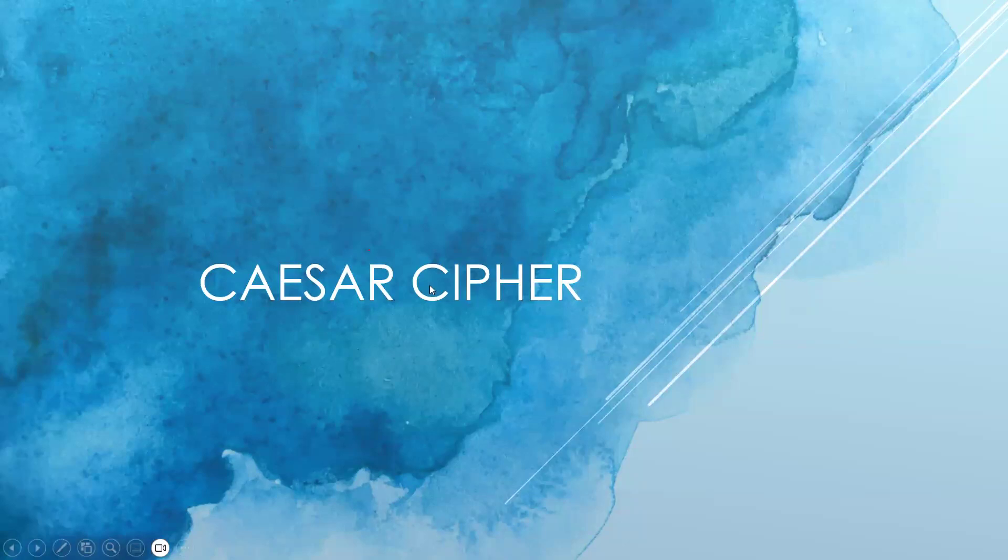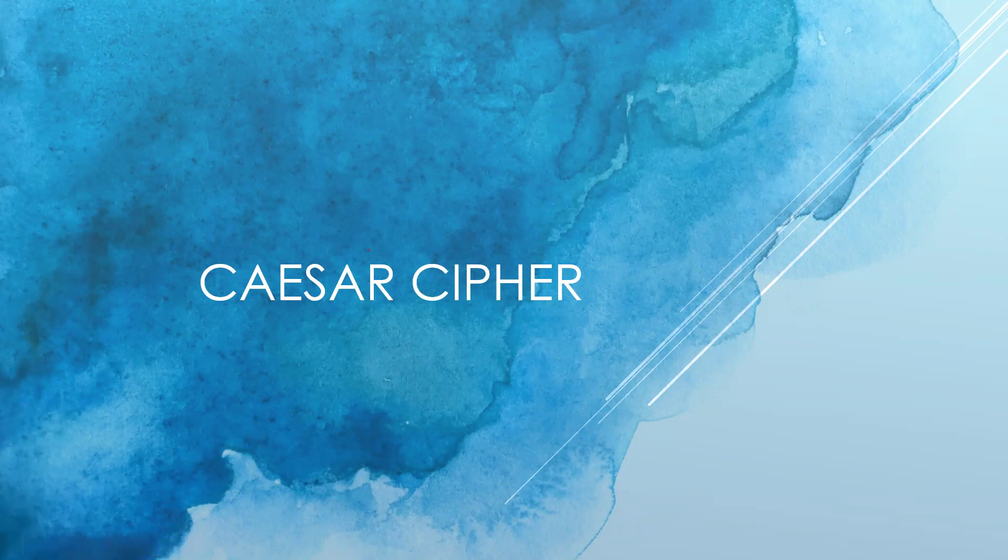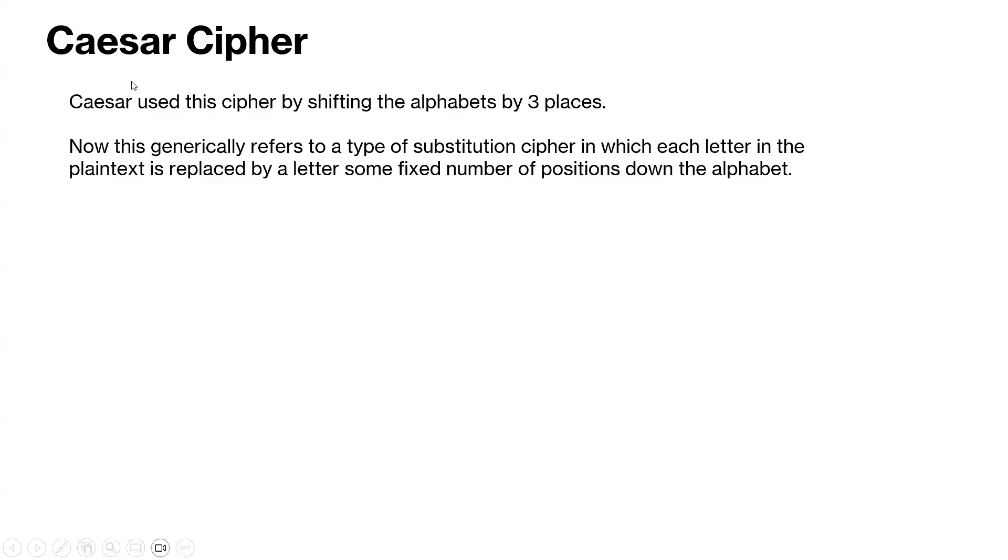Hello everyone, today we'll be going over Caesar Cipher, a cipher commonly found in codebusters in the Division C and Division B level. Alright, so Caesar Cipher.